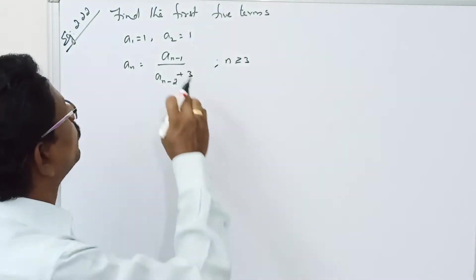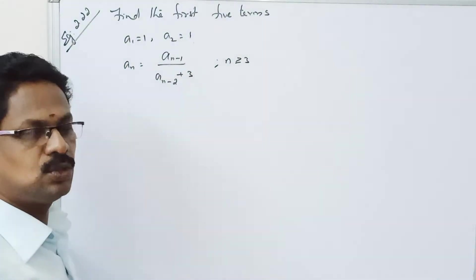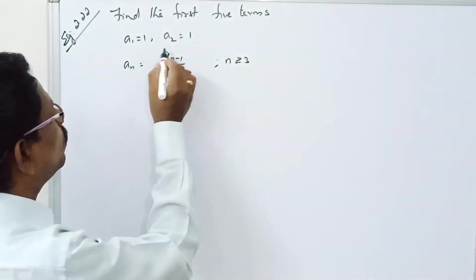Welcome to the Krimas. Find the first 5 terms. A1, A2, first 2 terms. So A1, A2.